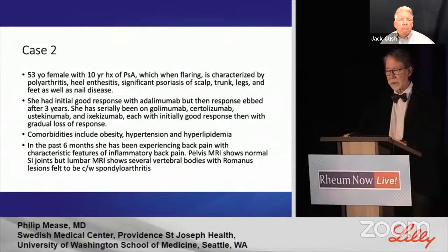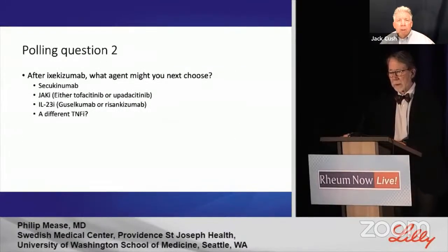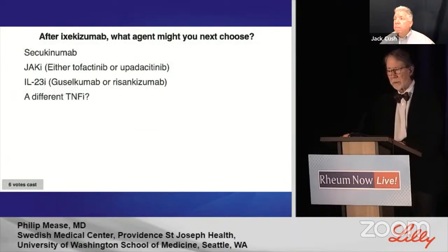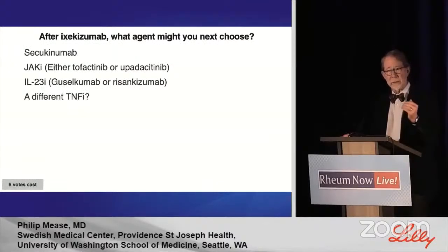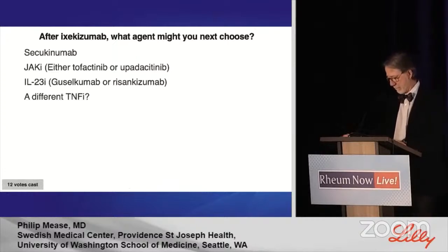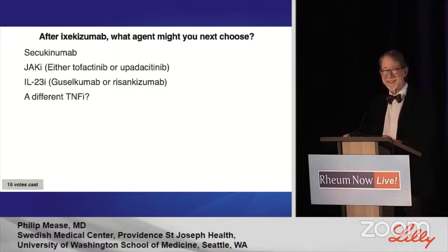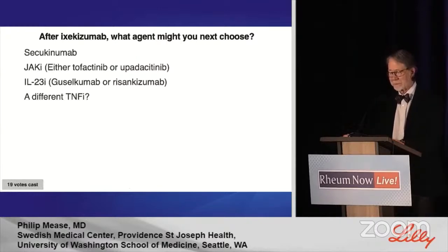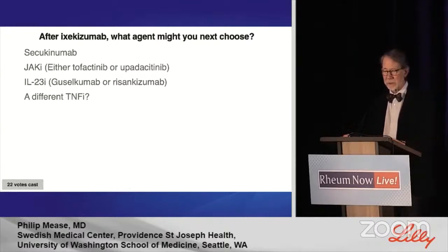After ixekizumab — which is the last in this cycle — which agent might you next choose? Secukinumab, a JAK inhibitor, an IL-23 inhibitor, or a different TNF inhibitor? There's no exactly right answer — you may have different preferences here. Let's take a look at the results.